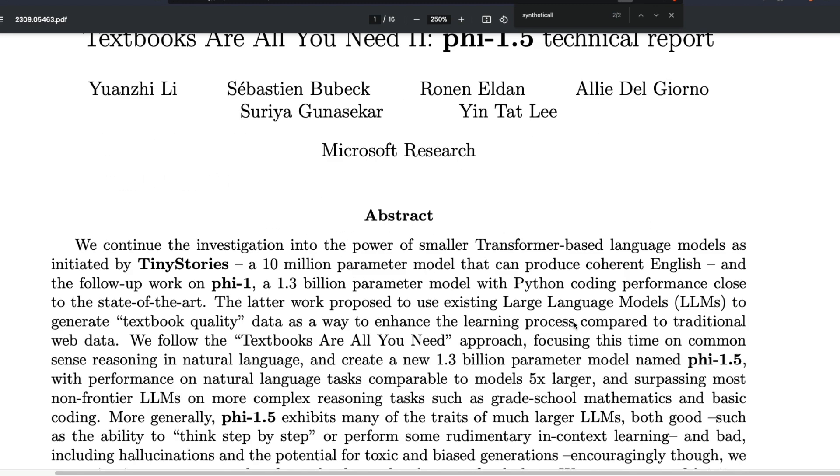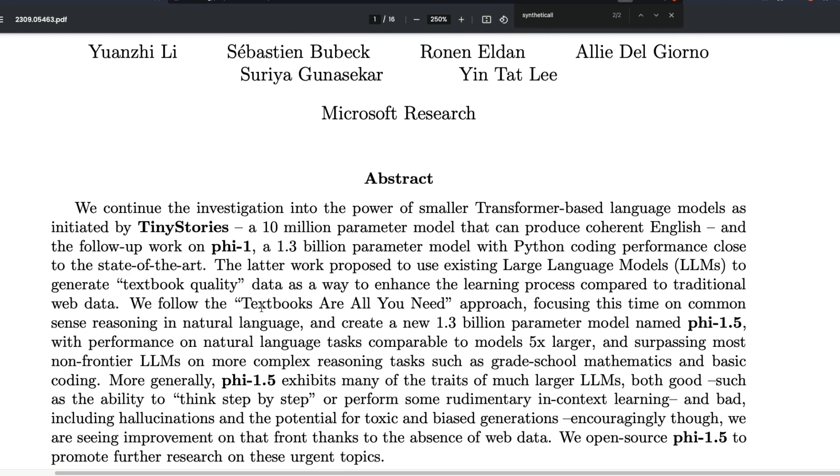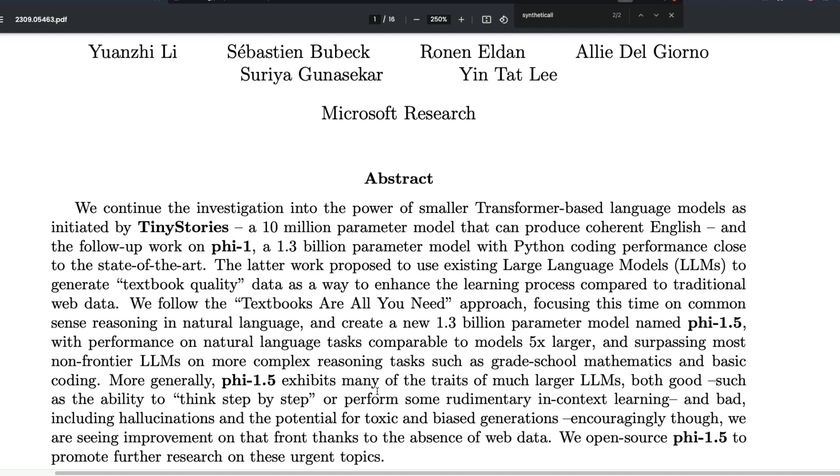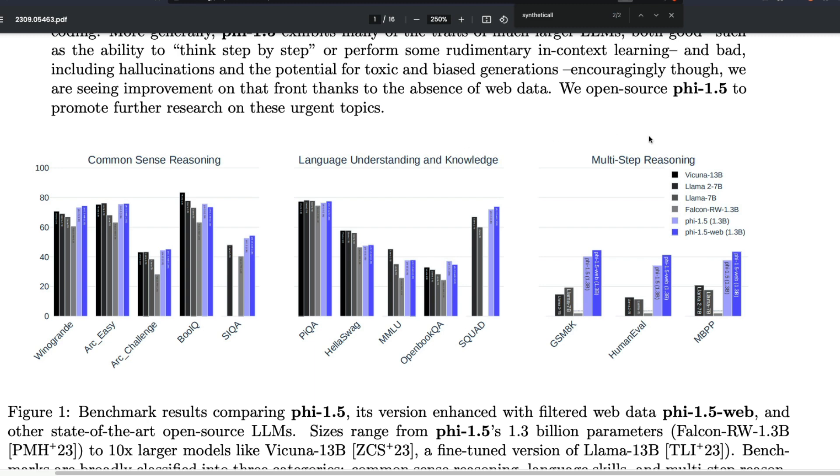I think the biggest lesson for me from this particular paper is the scale, the scale of the differences of the smaller model and the bigger model and the kind of things that it can learn. For example, it can learn, it managed to learn, think step by step, primarily from the data that we gave for training. And also it is doing a good or let's say rudimentary in context learning just from the data. There is no fine tuning. There is no supervised fine tuning or instruct fine tuning. There is no RLHF to tell the model how to respond back. But despite all these differences or despite all these not being available, just because we had got a good textbooks or all you need approach data set that has helped the model do well in terms of the reasoning, especially the multi step reasoning and the language understanding and the common sense understanding.